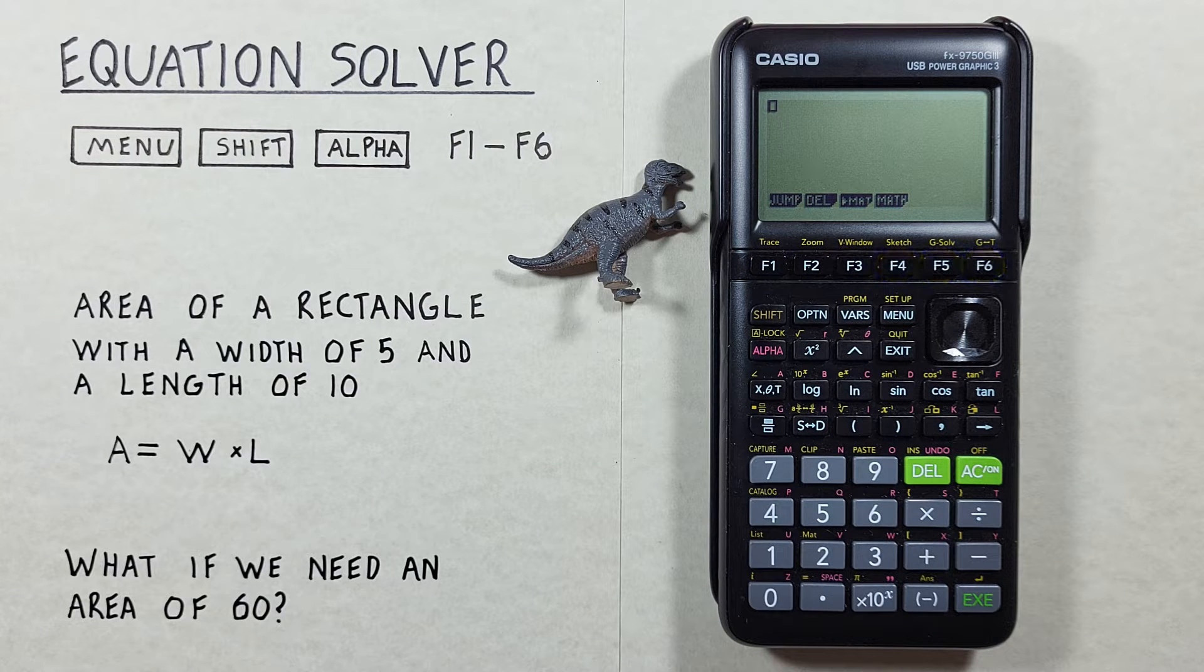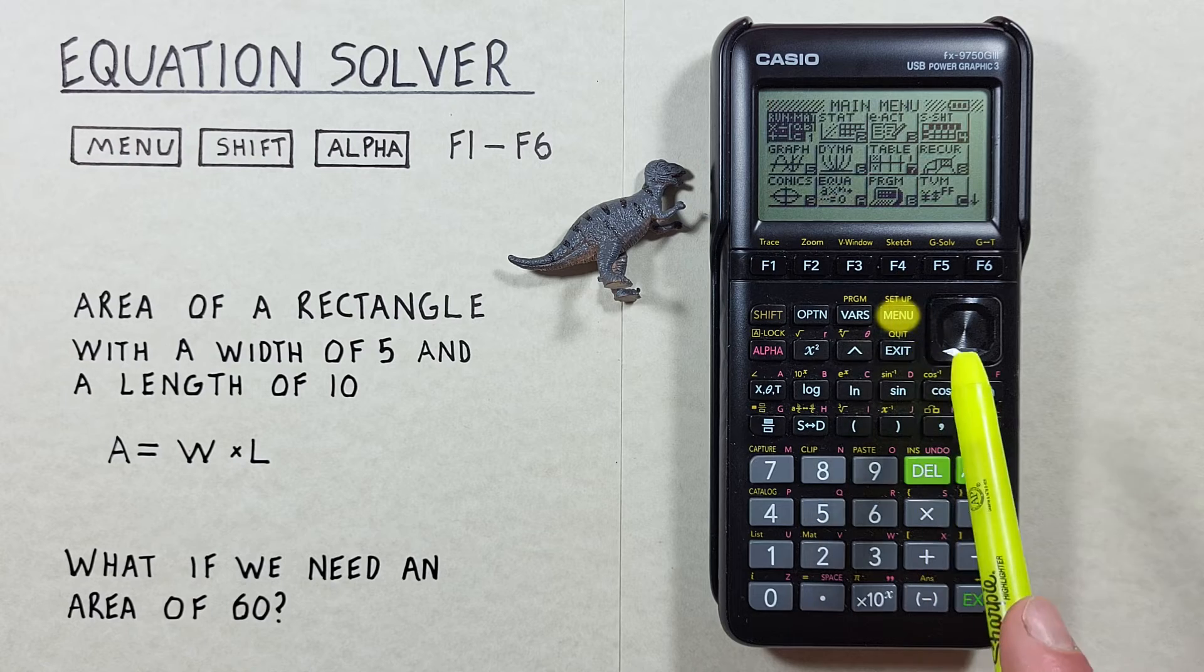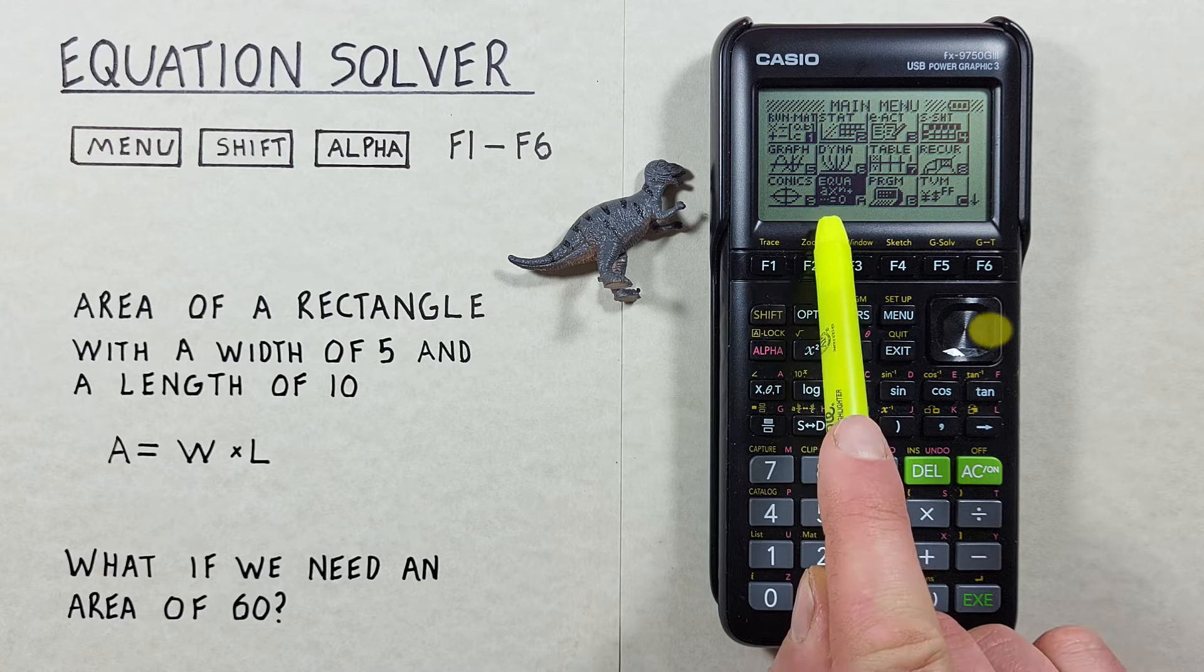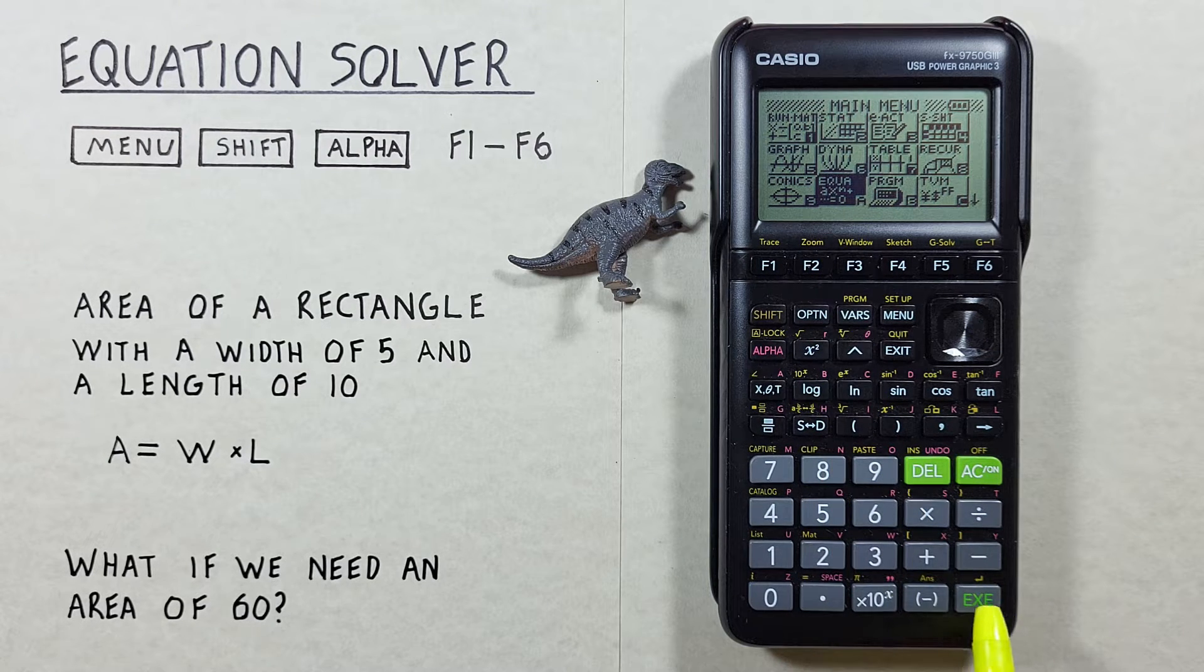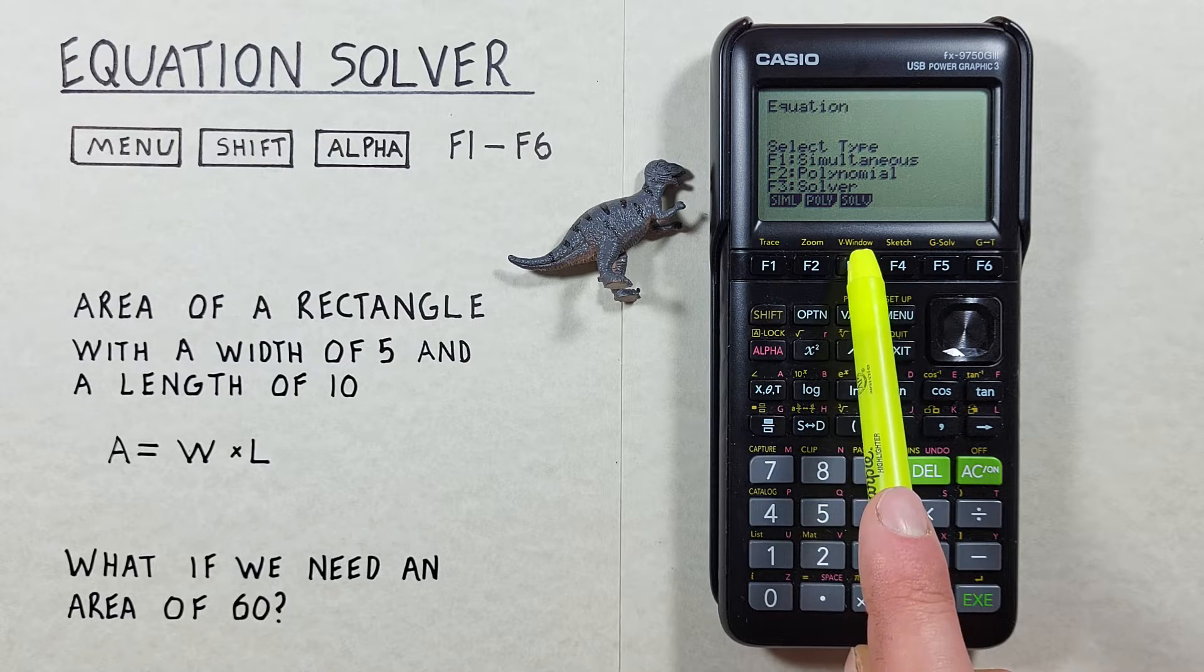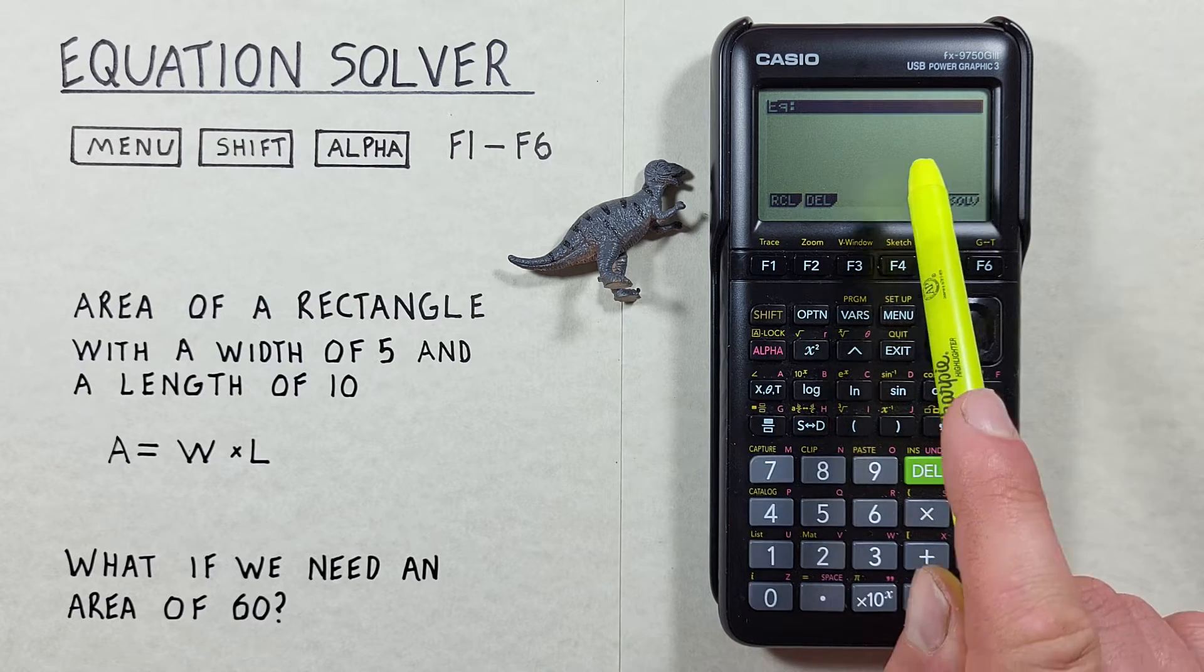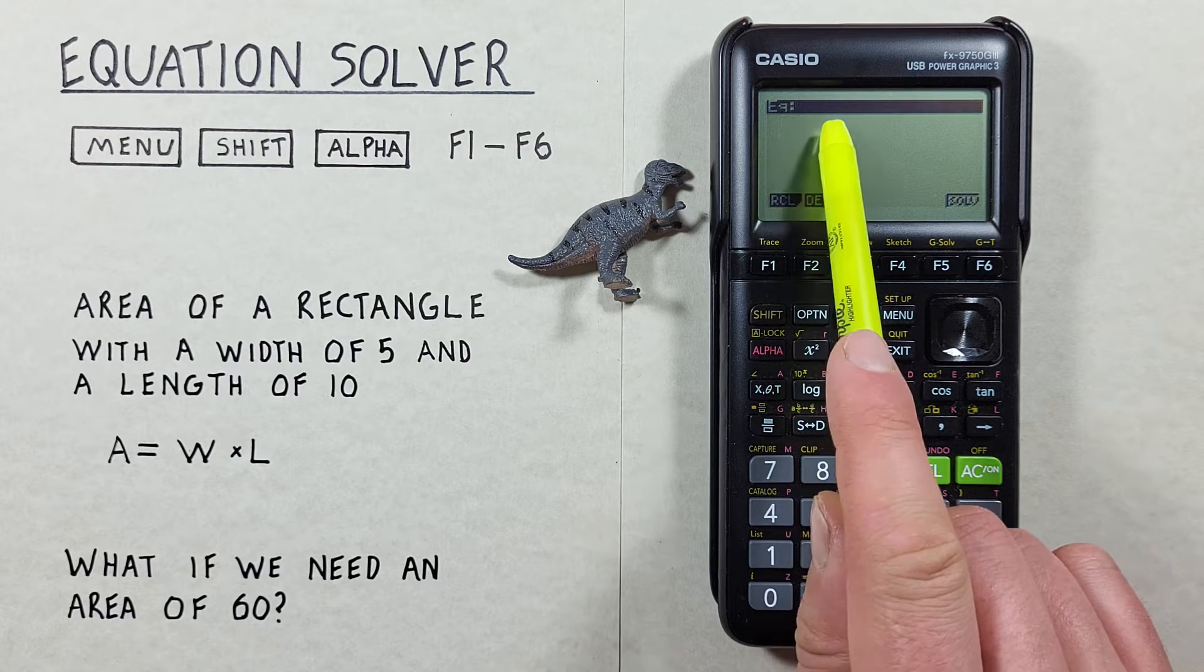To use the equation solver app first we need to navigate to it in our calculator. To do that we go to the main menu and then scroll down and over until we see EQUA here, and then we select it with the EXE key. That brings us to this menu, we want the solver so we'll choose F3. When we've done that, that brings us to this screen here and we see EQ for equation, and this is where we can go ahead and enter our equation.